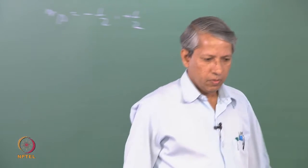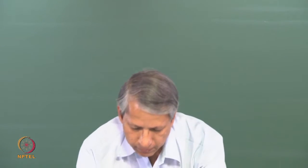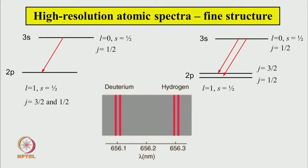Let us see how this explains various experimental observations. In the last lecture I showed you the fine structure of the spectrum of hydrogen and deuterium atoms, where 3s and 2p were connected by only one transition. Now for the 3s state, l = 0 and spin s = 1/2 together give a total angular momentum of j = 1/2.